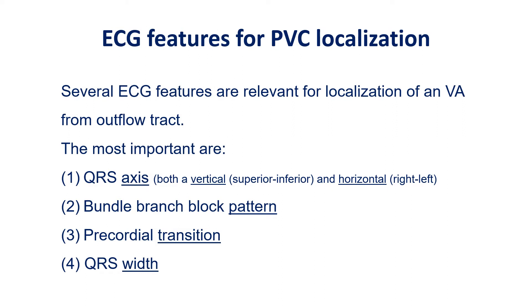Several ECG features like QRS duration, QRS axis, precordial transition, and bundle branch block pattern are relevant for localization of ventricular arrhythmia from outflow tract.